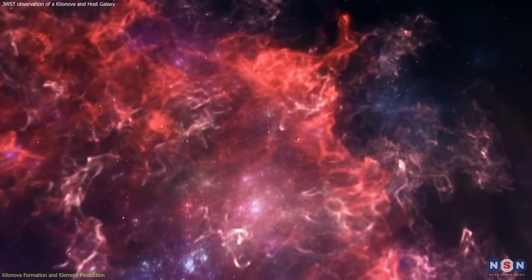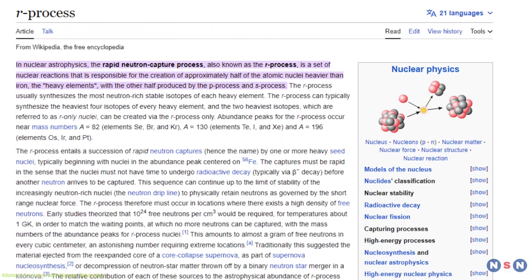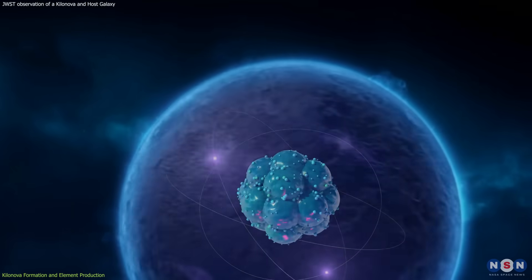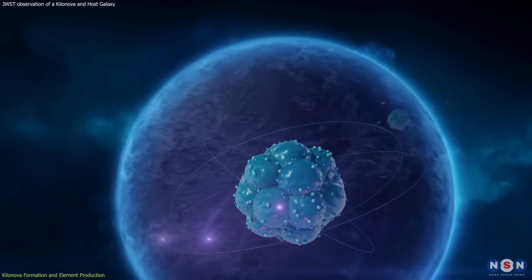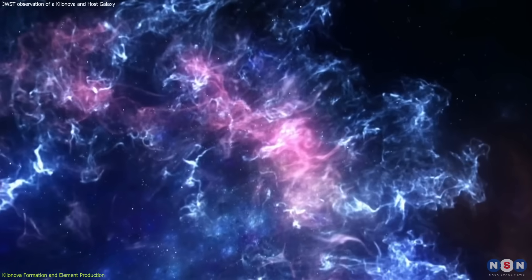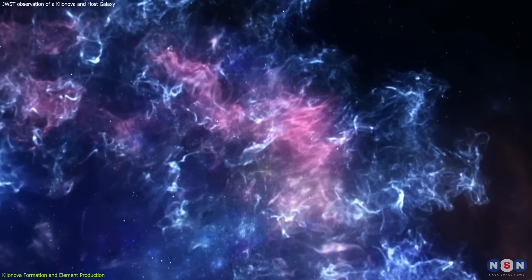So, how do these elements form? Well, it's a process called rapid neutron capture, or R process for short. Basically, what happens is that some of the neutrons from the neutron stars are captured by lighter nuclei, such as iron or nickel, in the debris cloud.